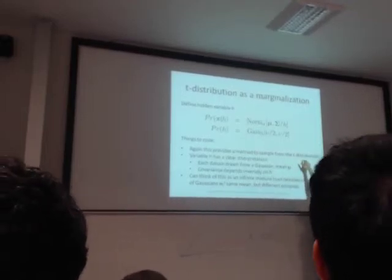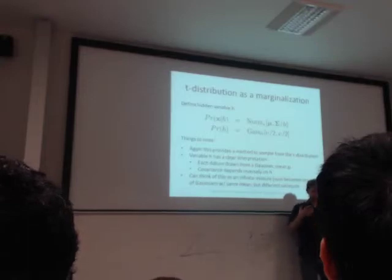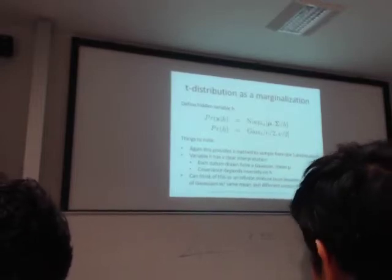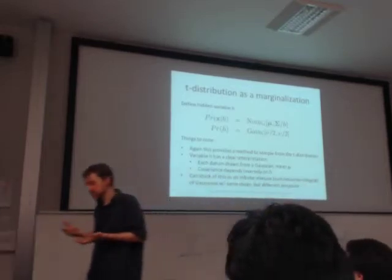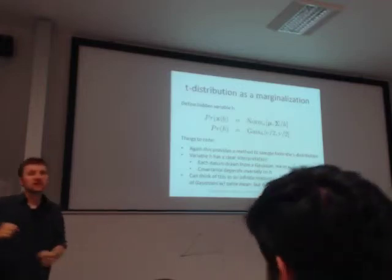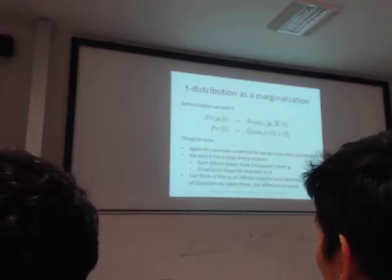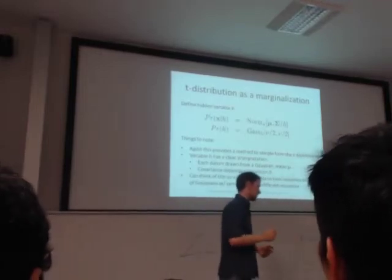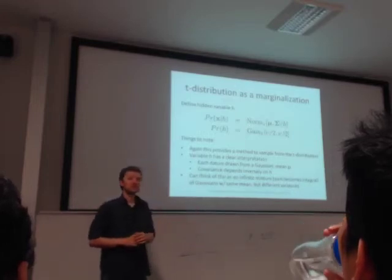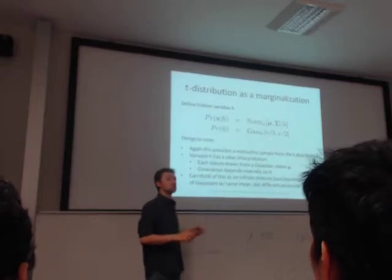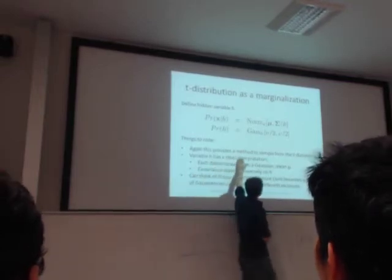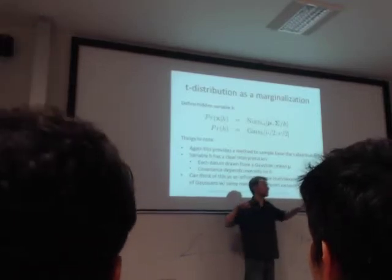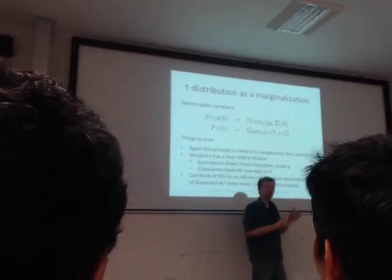We have a simple way to sample from the T distribution because we've expressed it as a combination of gamma functions times normal distribution. In the assignment, you had to randomly pick between H equals one and H equals two. Here, similarly, we might pick a random H — only it won't be completely random. We're going to use this gamma function, biased towards small numbers. Pick a random-ish H, and then given that H, compute the normal distribution with the scaling factor.